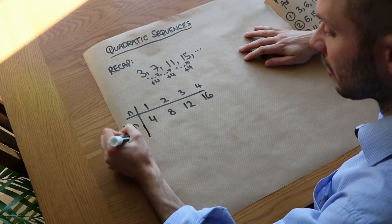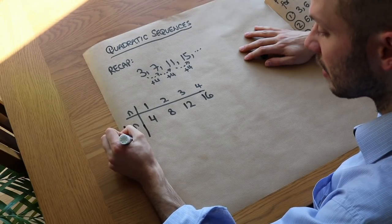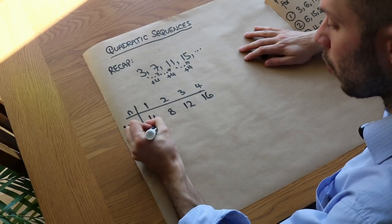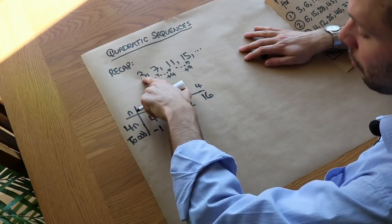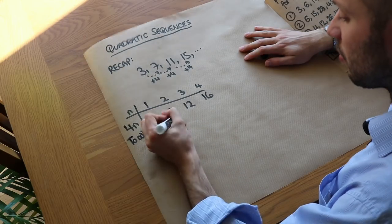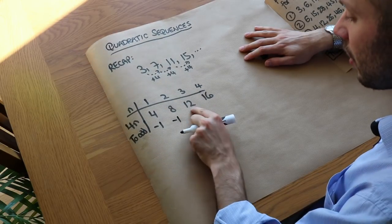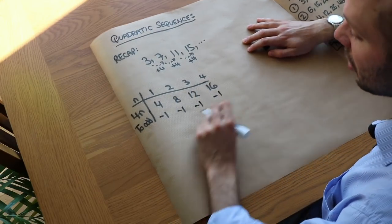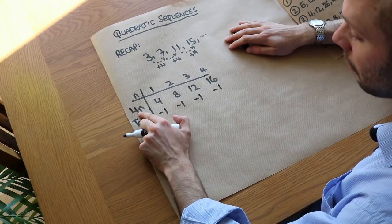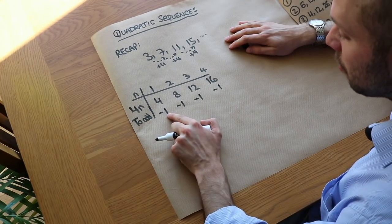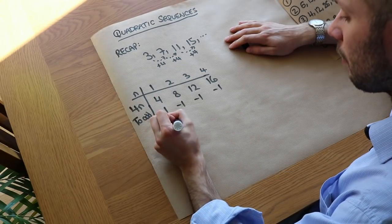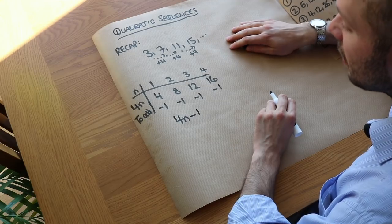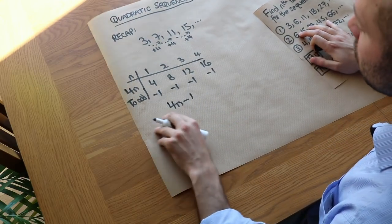So we have this idea of adjustment — what do we need to add or subtract? We need to subtract 1 to get to the right term. If 4n gave us 8, we subtract 1 to get 7; if 4n gave us 12, we subtract 1, and so on. Therefore the formula was 4n, but we had to subtract 1, so the formula is 4n minus 1.